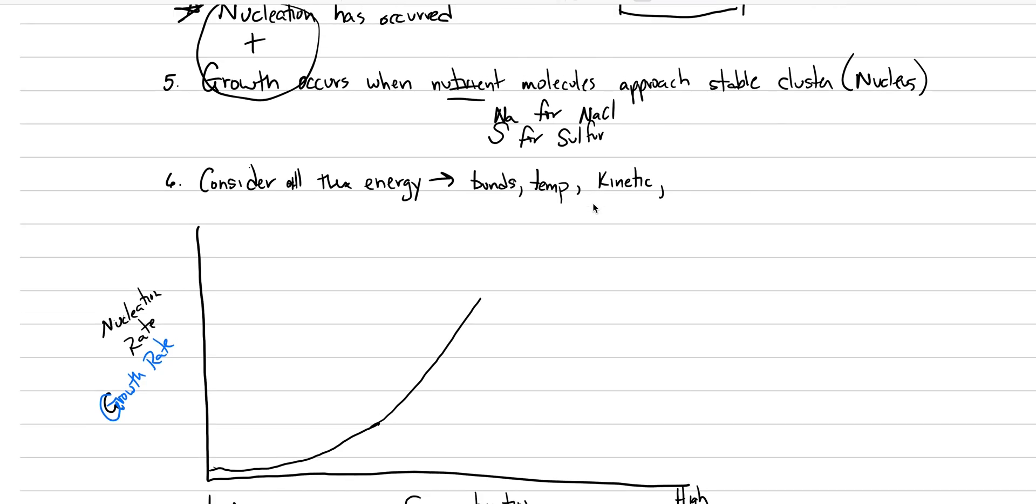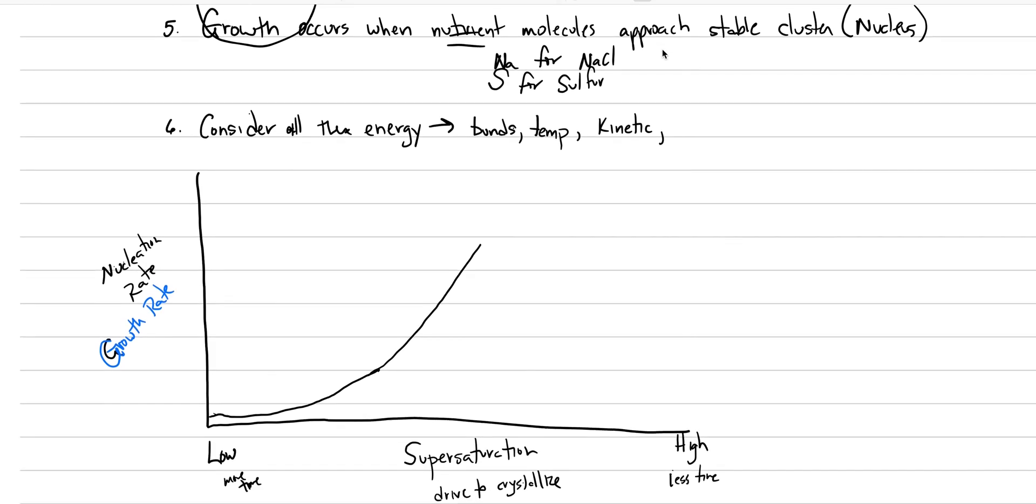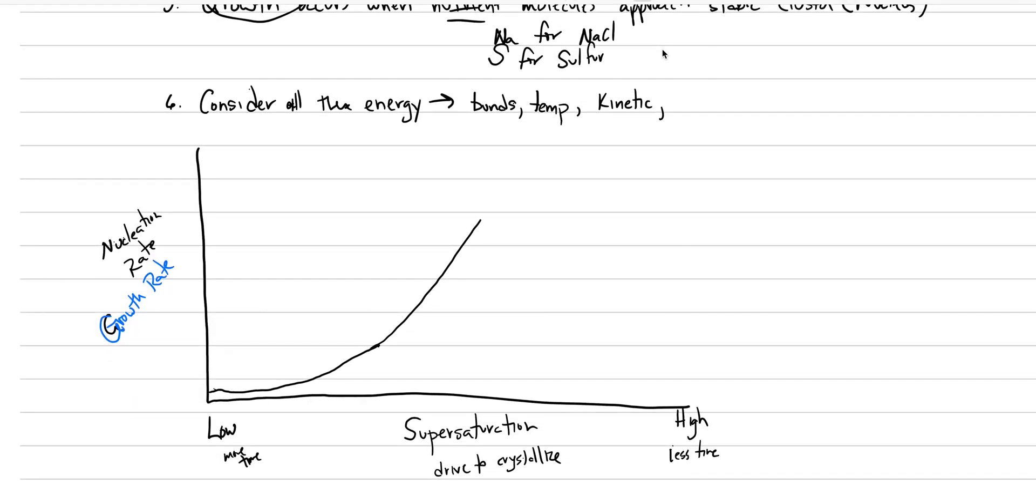Why? Well, lots and lots of more collisions are occurring. The clusters are forming. Those clusters are the nuclei. So we have very high degrees, and then we're going to come back down. Because at really high degrees of supersaturation, there's not even enough time to form any crystals.